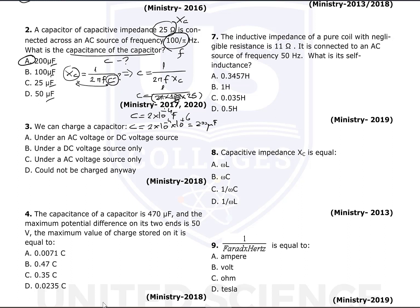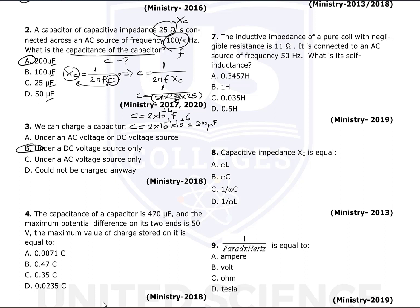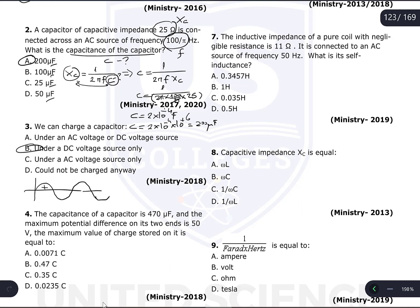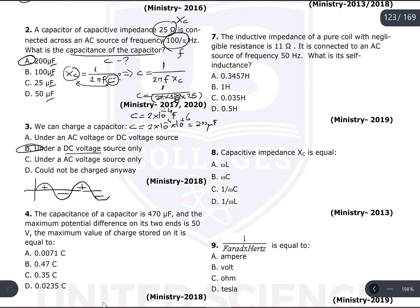Can we charge a capacitor under an AC or DC voltage source? The answer is under a DC voltage source only. A DC voltage is always constant — always positive or always negative — so there is only charging. With AC, the voltage alternates positive and negative so quickly (50 times per second) that the capacitor cannot be completely charged. That is why a capacitor can be fully charged only using a DC voltage source.